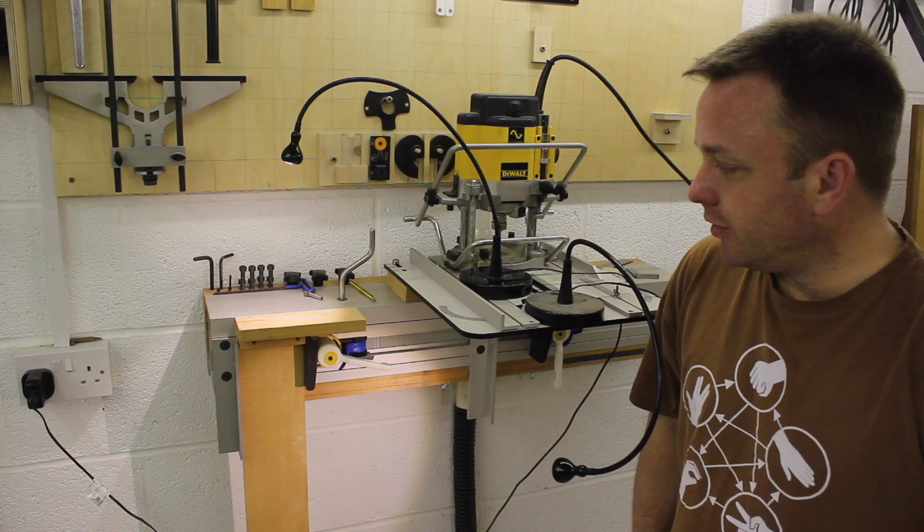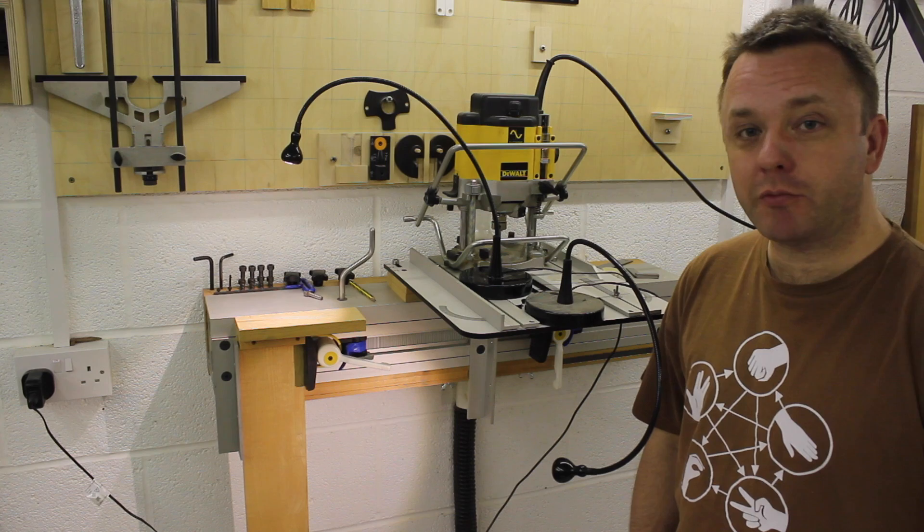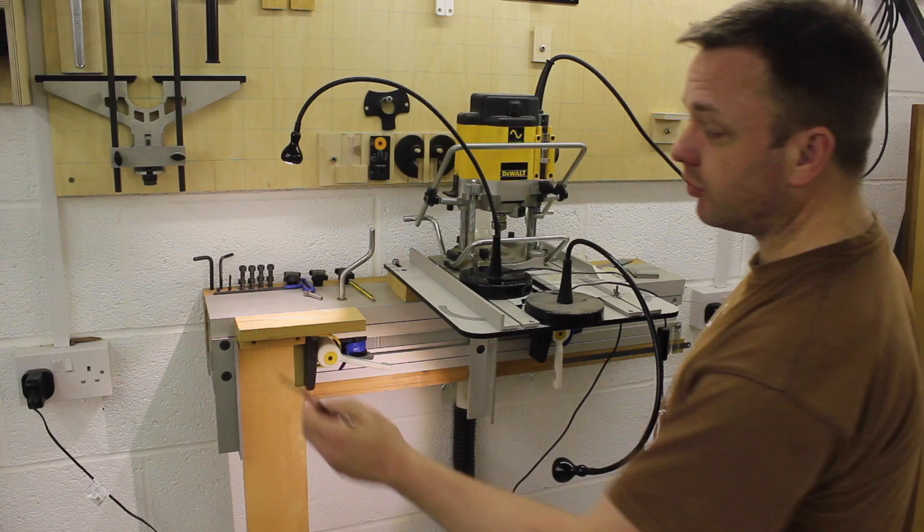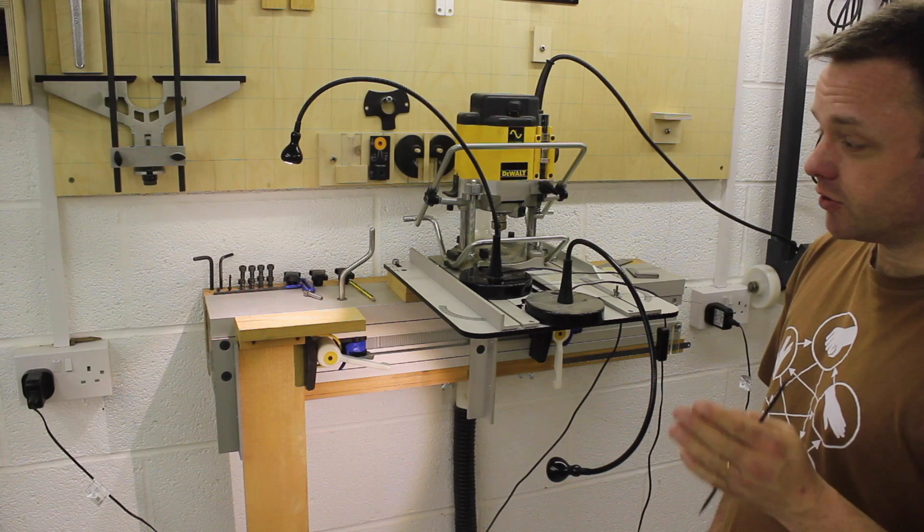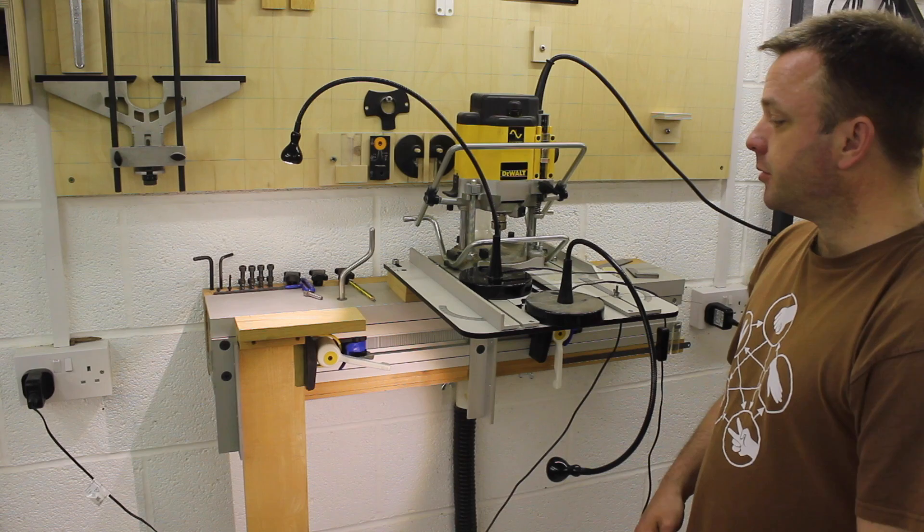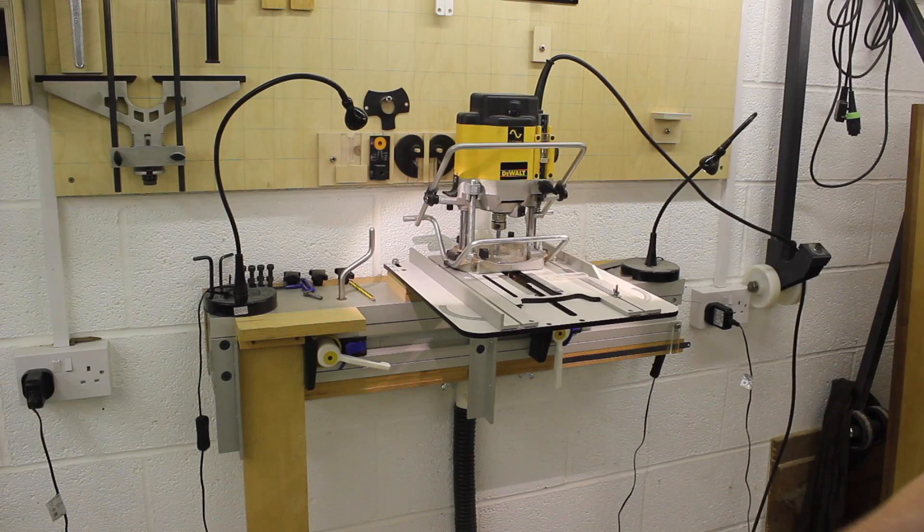So although we said that the Woodrat doesn't have any built-in accurate method of measuring where to position your router bit, it is possible to create something that will measure as accurately as you can line up these two lines. Of course, there's always going to be some minor error, but hopefully it won't be detectable in the final joint that you make. And it also depends what you're trying to make. But I think you'll find that it will work pretty well.